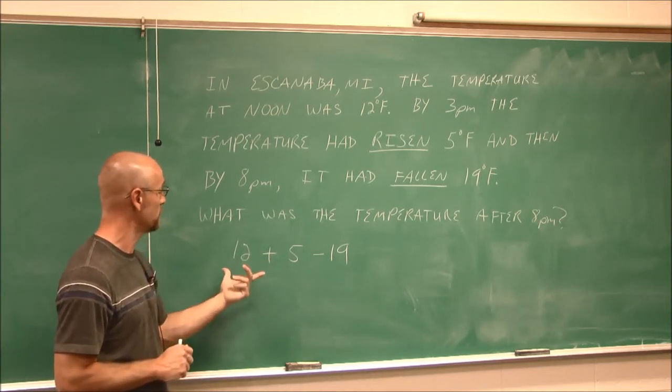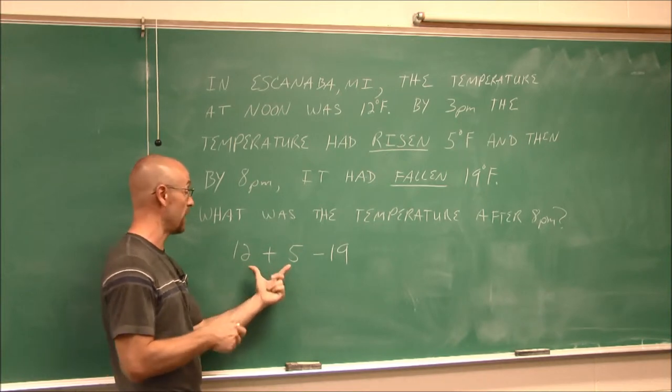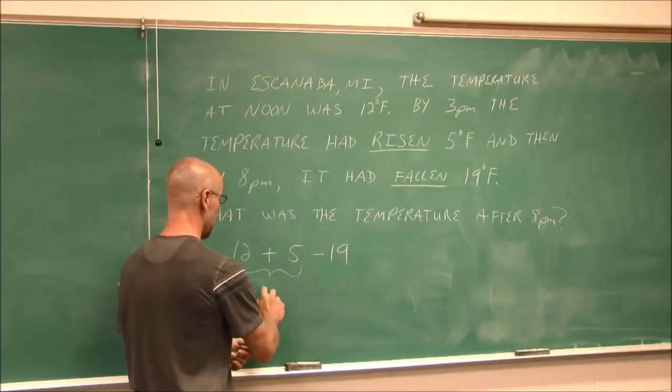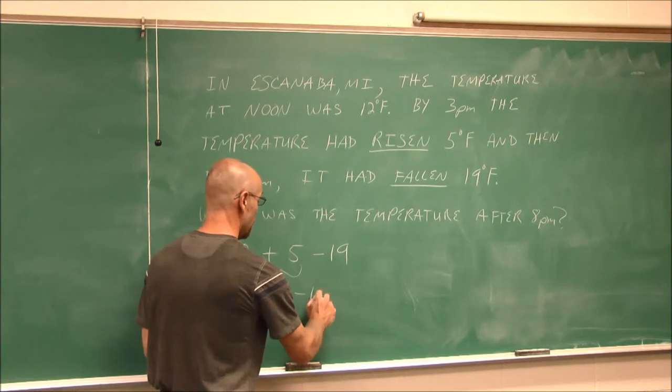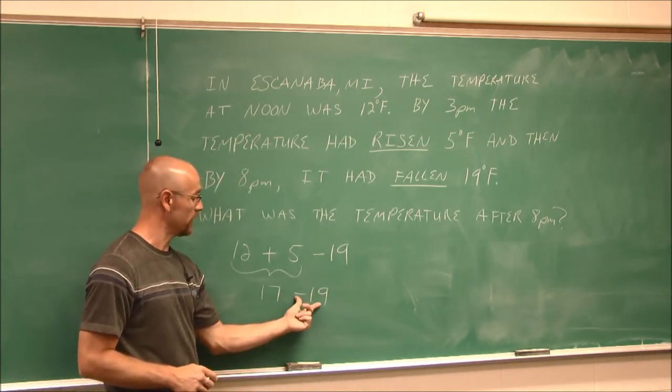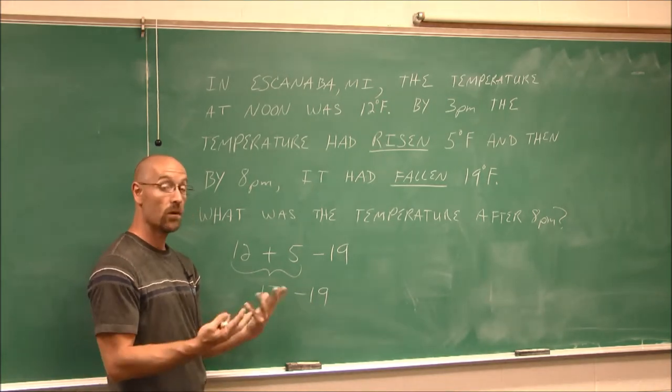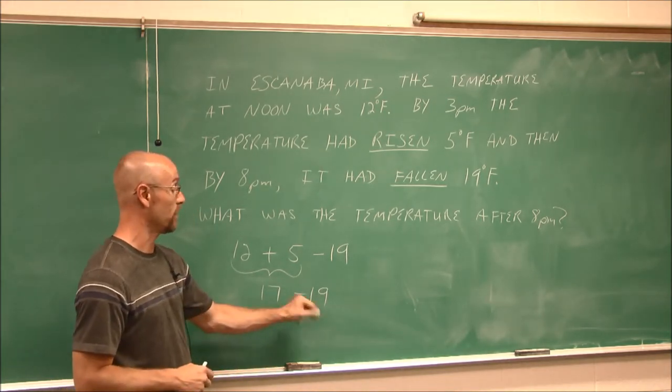I can say 12 plus 5, they are the same sign, so I'm going to combine them, 17. But then I have this integer of negative 19. Well, if we think about this, we can think of this as 17 plus a negative 19, or we can think of it as it is, 17 minus 19.